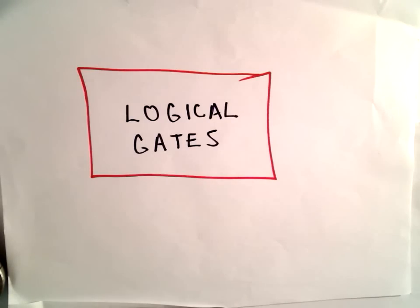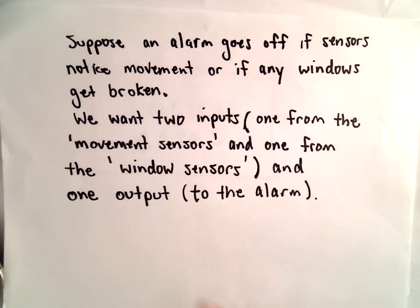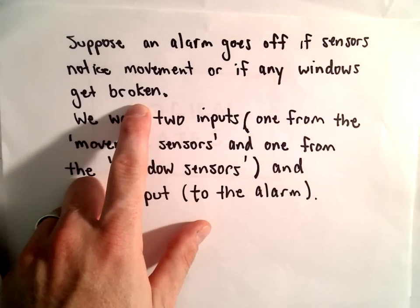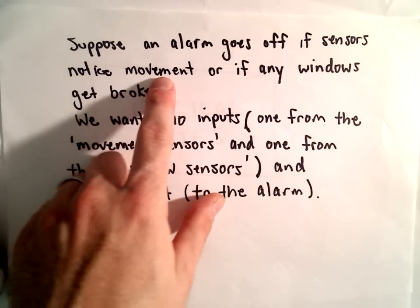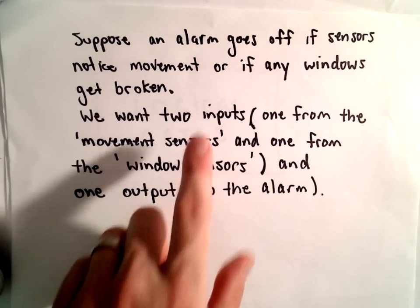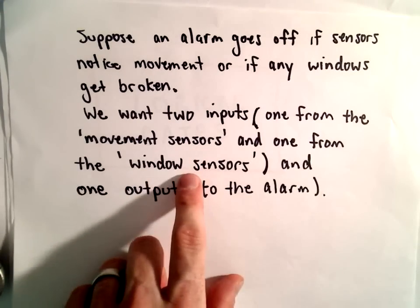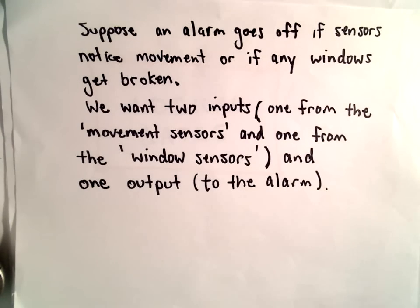There's not a lot of writing in this one — I've got a lot of stuff written down and a little slideshow, but in some other videos we'll start taking some examples. Just a little motivation and terminology: suppose an alarm goes off if sensors notice movement or any windows get broken. For a burglar alarm, if the sensors pick up movement at night or windows get broken, the alarm should go off. We'll need two inputs — one from the movement sensors and one from the window sensors — and one output to the alarm.